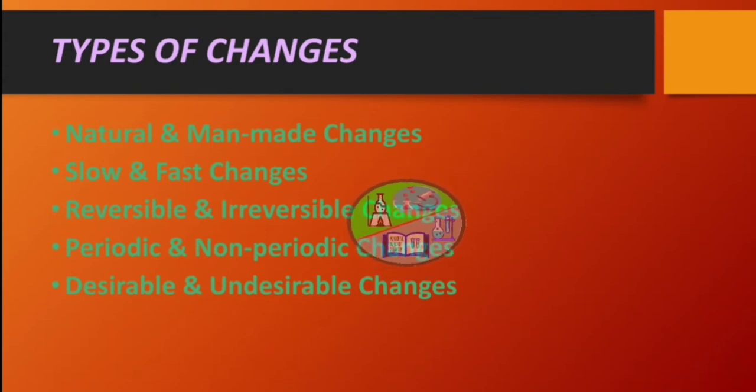Next is desirable and undesirable changes. Mainly, the changes that is beneficial for us is regarded as desirable change. For example: cooking of food, growth of a plant, etc.